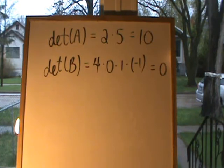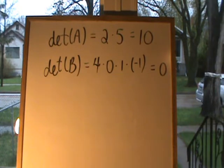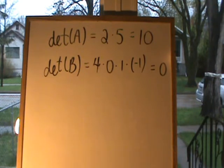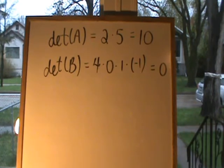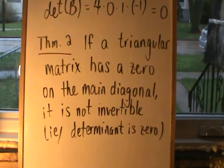This theorem about upper and lower triangular matrices tells us whether or not the determinant of a triangular matrix is equal to 0 simply by looking at the main diagonal. Matrix A is invertible because its determinant is not 0, and there was no 0 on the main diagonal. For matrix B, however, there was a 0 on the main diagonal and we end up with determinant 0. So if a triangular matrix has a 0 on the main diagonal, the determinant is 0 and that matrix is not invertible.